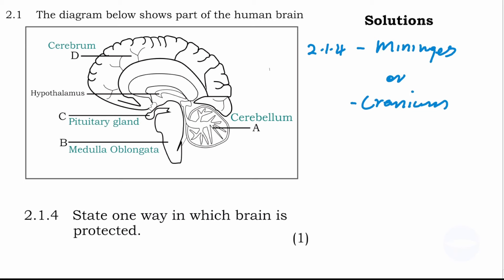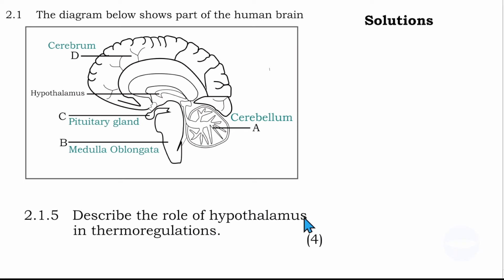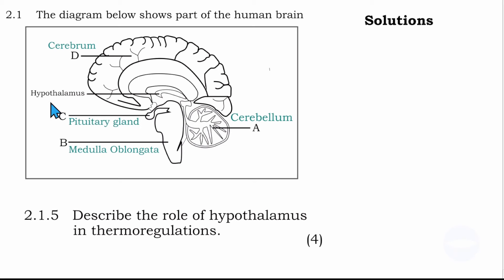The next question says: describe the role of the hypothalamus in thermoregulation. Thermoregulation is the process of regulating body temperature. We have to explain the role of the hypothalamus. When the temperature is abnormal, sensors detect this temperature level — the hypothalamus detects it and then sends impulses to the sweat glands and blood vessels. The process goes like this: the hypothalamus receives the impulse.